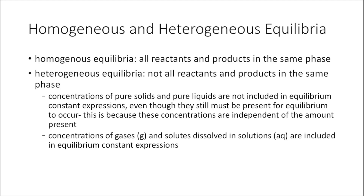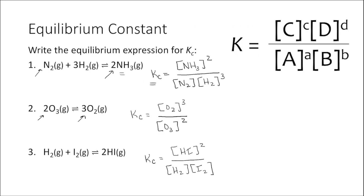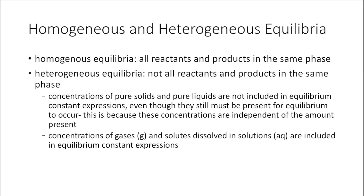One last topic to cover is homogeneous versus heterogeneous equilibria. For homogeneous equilibria, all reactants and products are in the same phase — all the examples we looked at had all gases. For heterogeneous equilibria, not all reactants and products are in the same phase, which has implications for writing equilibrium expressions. The concentrations of pure solids and pure liquids are not included in equilibrium constant expressions, even though they must still be present for equilibrium to occur. If you increase the amount of a pure solid in a reaction, you increase both its mass and its volume, so the concentration ratio stays the same.